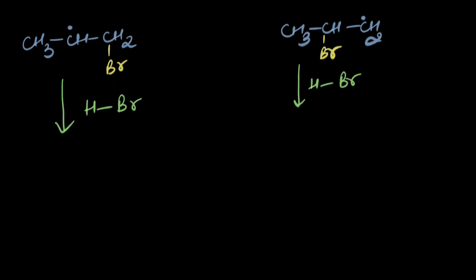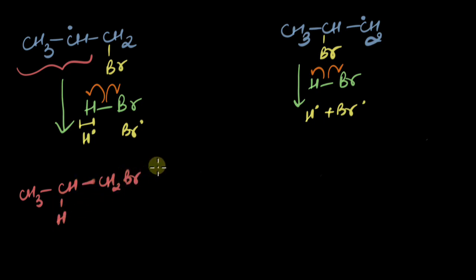For that they would want this HBr bond to break. They are looking for this H and Br atom would be asked to go away. What happens when the left radical does that? It forms CH3-CH makes a bond with this H and we get CH2Br here plus bromine atom.